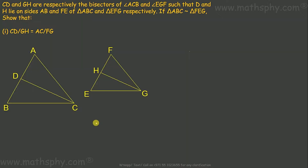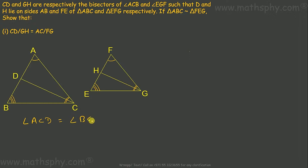Let's take up the first one: CD over GH is equal to AC over FG. Since triangle ABC and triangle FEG are similar, the corresponding angles are equal — angle A equals angle F, angle B equals angle E, and angle ACB equals angle FGE. CD and GH are the bisectors of angles ACB and FGE, so angle ACD equals angle BCD.